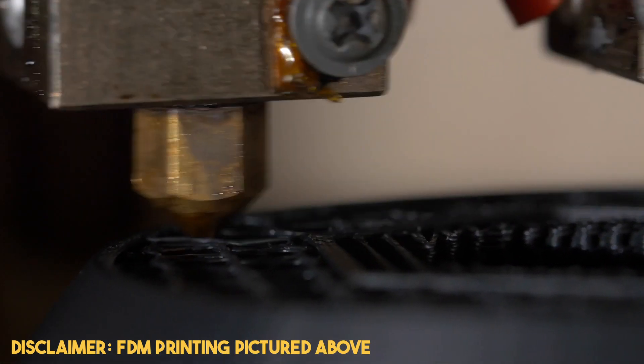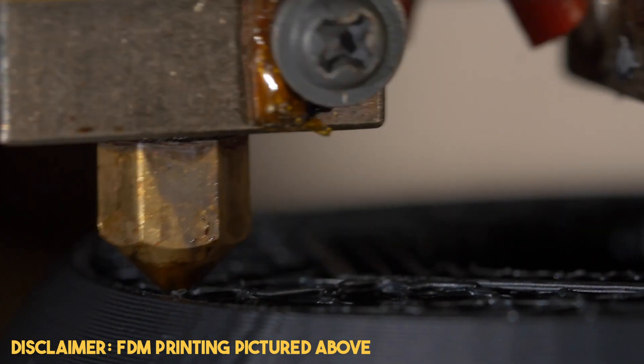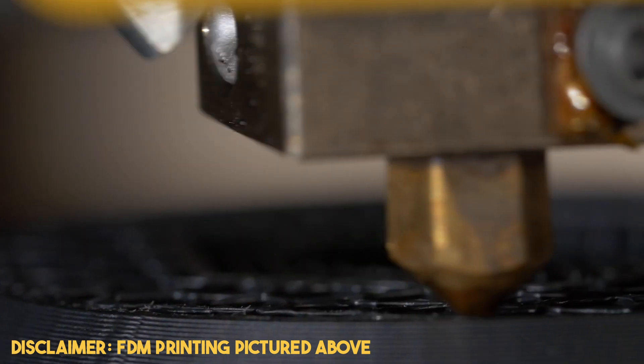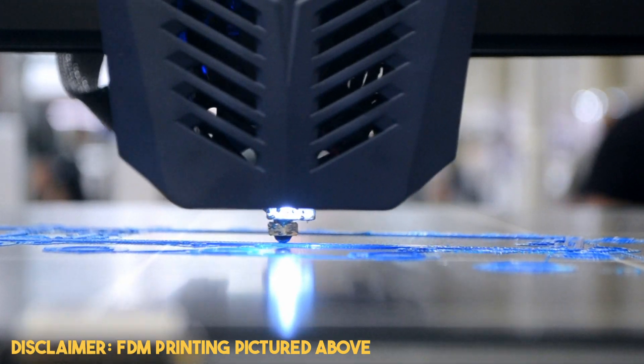Extrusion printing is similar to your standard filament printing, also known as FDM or FFF, and it's the most accessible type of printing out there. Bioink is deposited through a nozzle in layers to form a 3D shape.